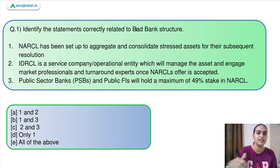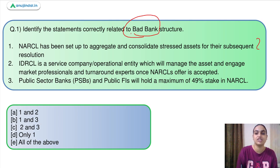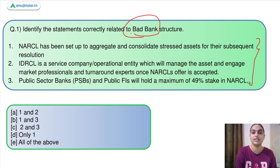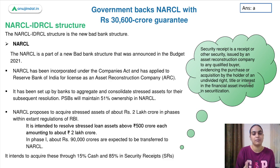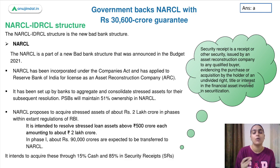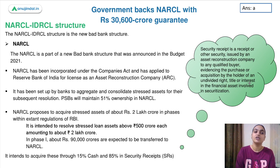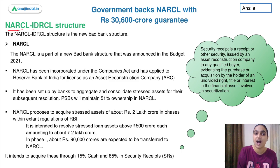Moving on to question number 1: identify the statements correctly related to the bad bank structure. We have to identify which statements correctly relate to this bad bank structure. We have already had sessions where I talked about the bad bank — the proposed bad bank structure to buy the NPAs of the banks and help in their resolution. Let us discuss this bad bank structure in detail and what the recent news related to it is. We can also refer to it as the NARCL-IDRCL structure.